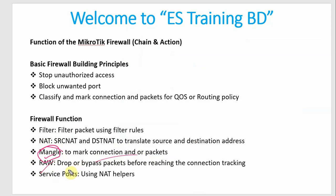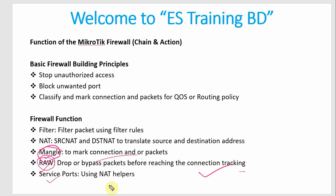Then Raw — for bypassing packets before reaching the connection tracking. If the MikroTik router processor is fully loaded, we have to mark the packet using the Raw function. Then Service Port, using NetHelper and other services — we have to look at the available services.